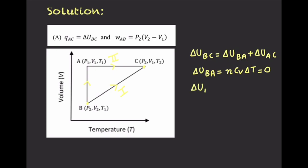From here, change in internal energy in path B to C equals change in internal energy in path A to C. Since A to C is an isochoric process, applying the first law of thermodynamics, work done is zero, so change in internal energy equals Q. Therefore ΔU in process A to C equals Q in process A to C. So the first part of option A seems correct — Q in process A to C equals ΔU in process B to C.